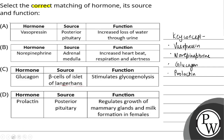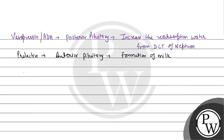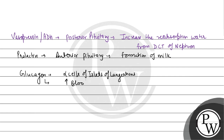If we talk about another hormone — glucagon — glucagon is released from the alpha cells of islets of Langerhans. Glucagon increases blood glucose level.